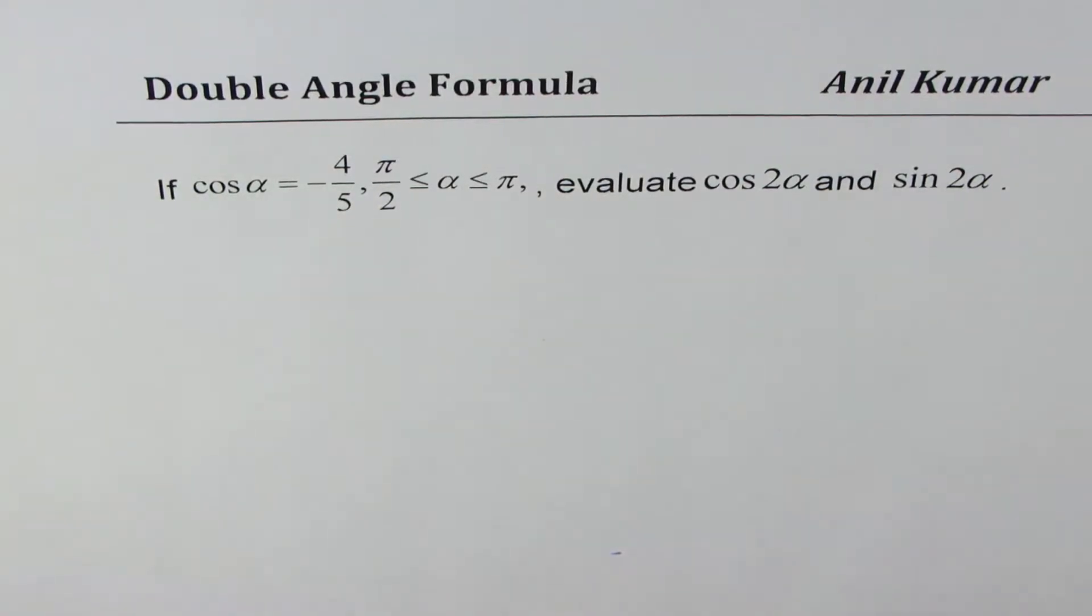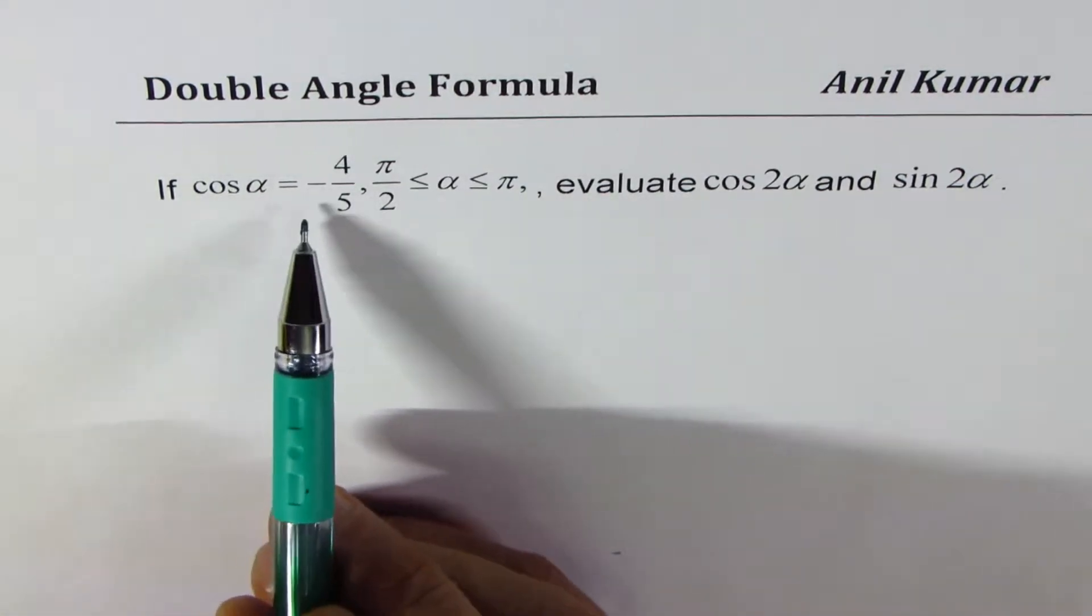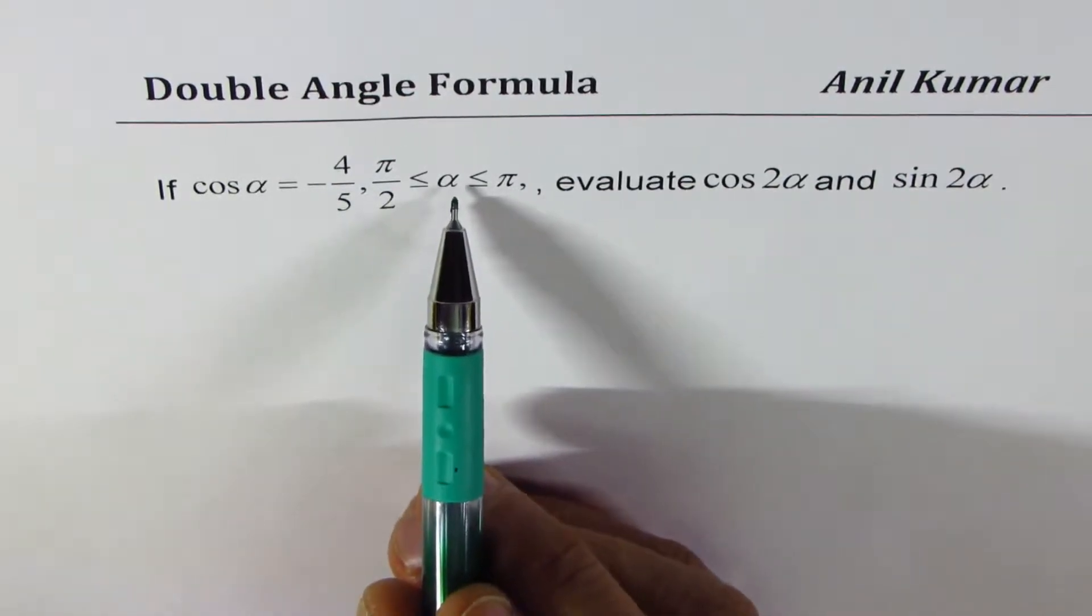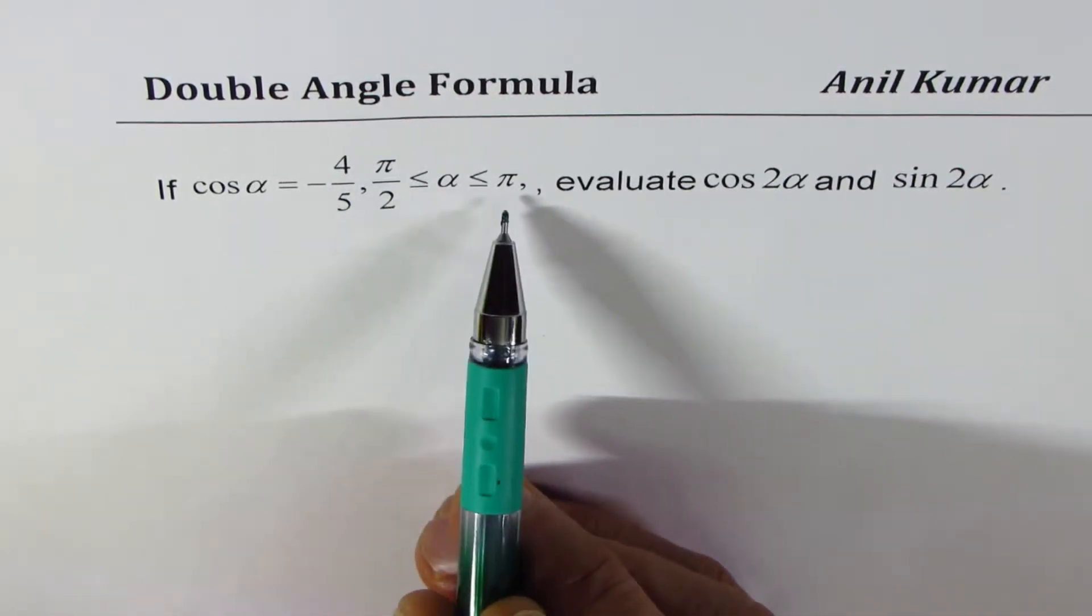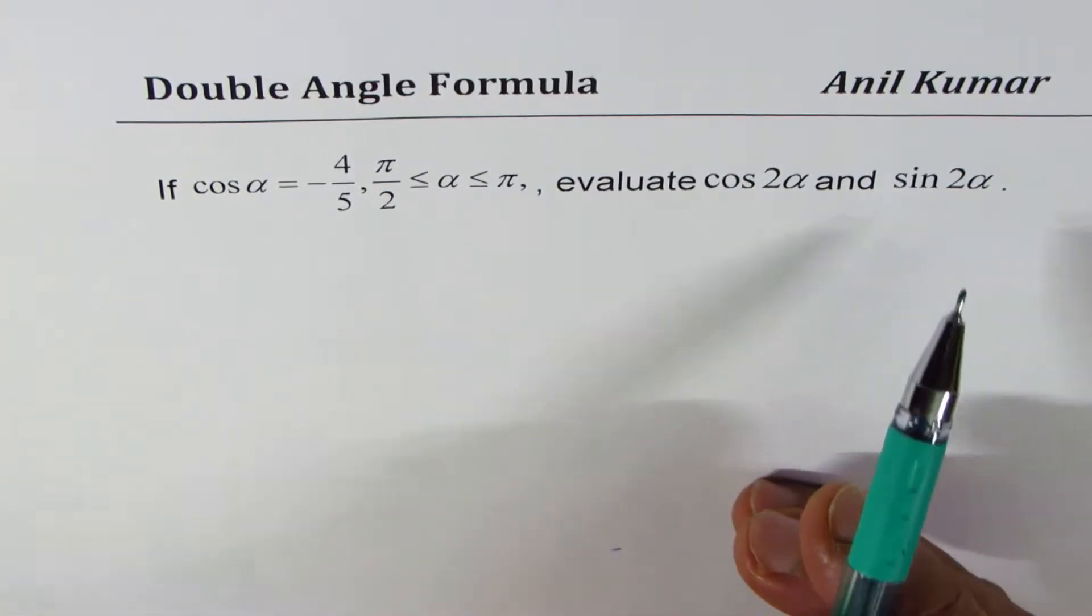I'm Anil Kumar, sharing with you an application of double angle formula. The question is, if cos alpha equals minus 4 over 5, and alpha is between pi by 2 and pi, evaluate cos 2 alpha and sine 2 alpha.